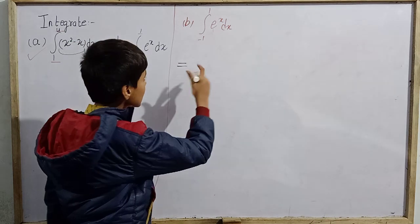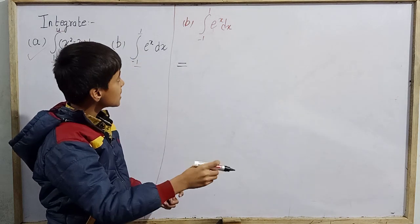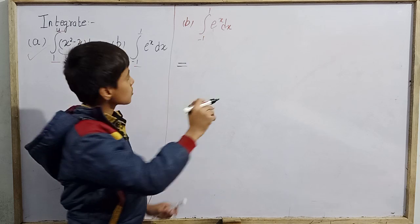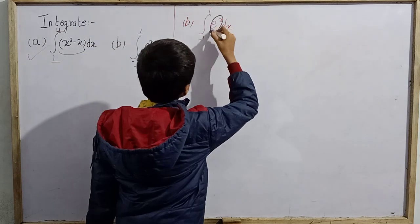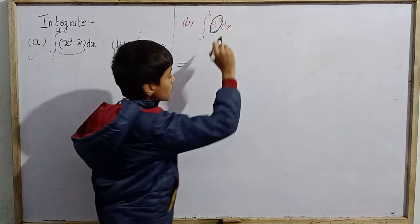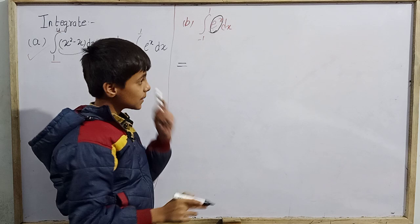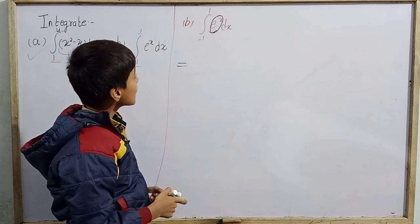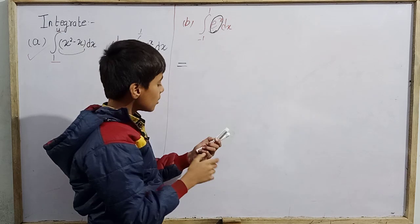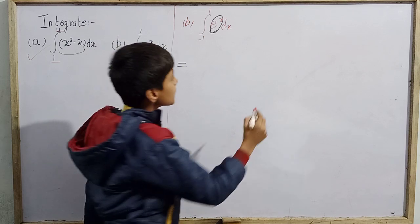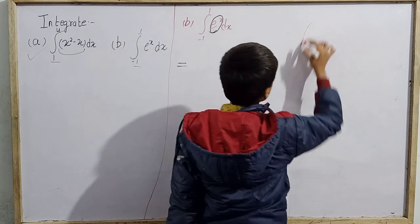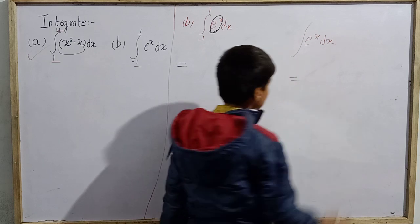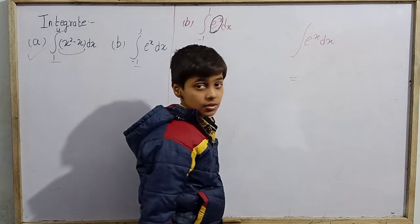Since there is no addition or subtraction, there is a single term to be integrated: e^x dx from -1 to 1. The integral of e^x dx is simply e^x.